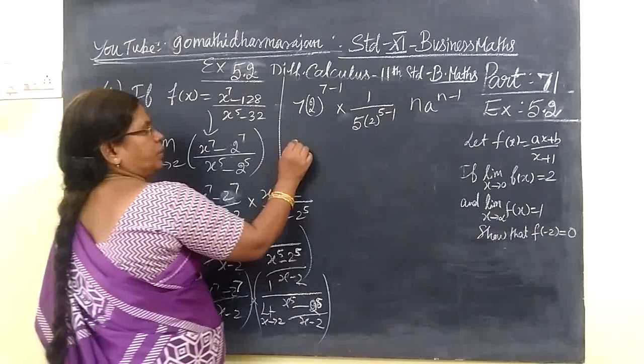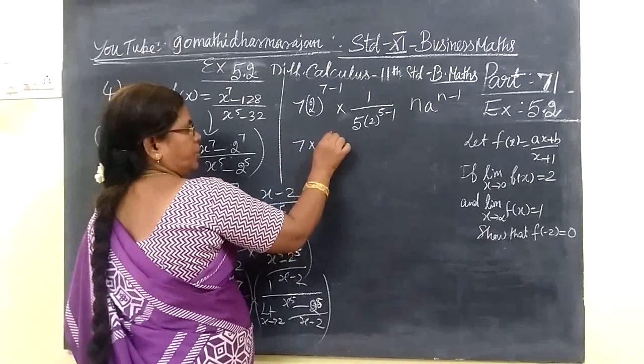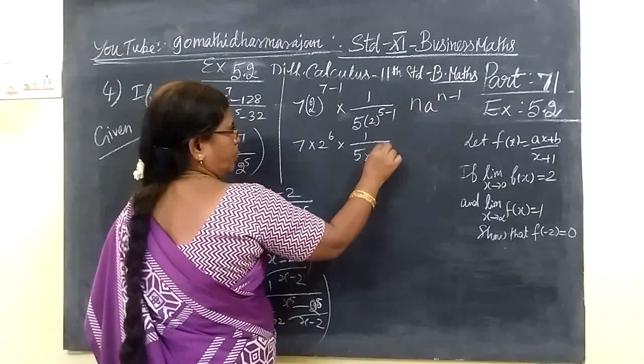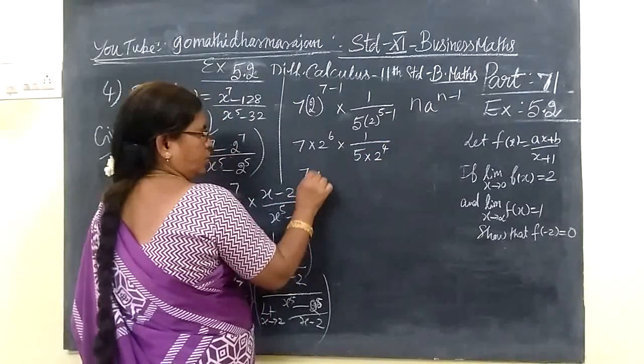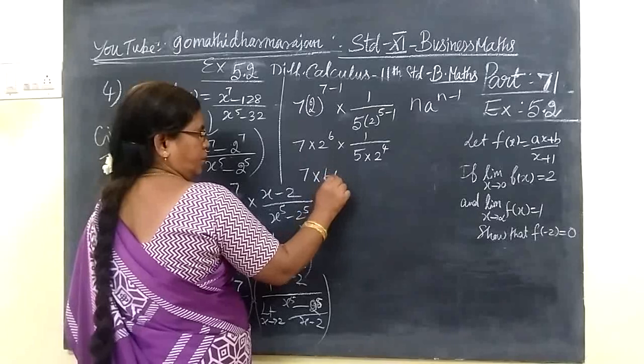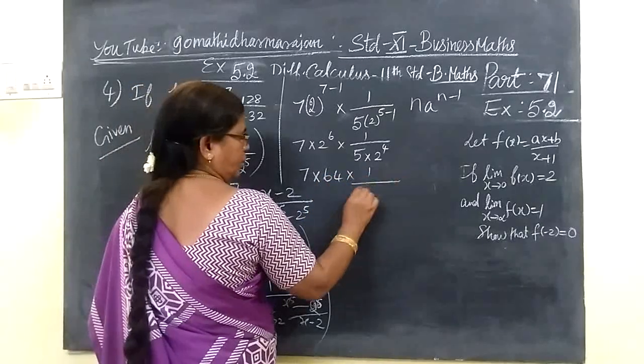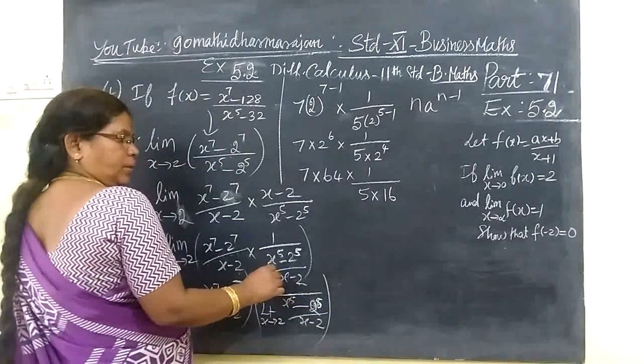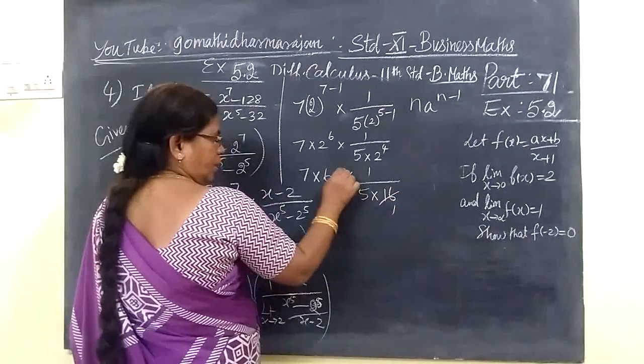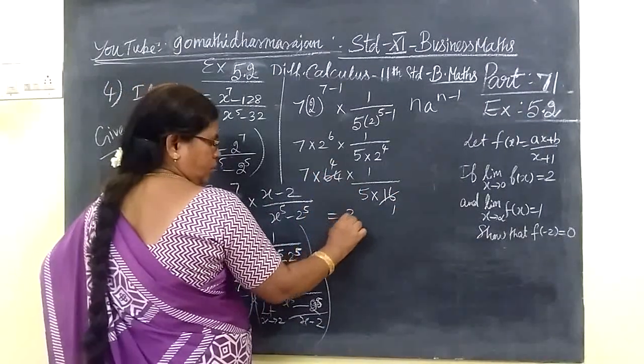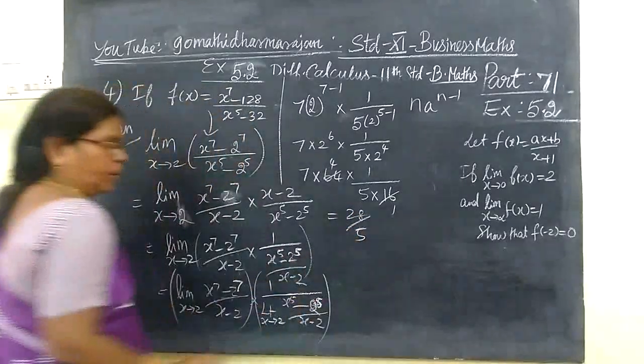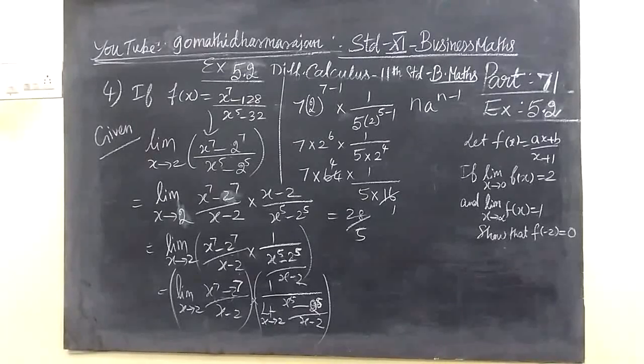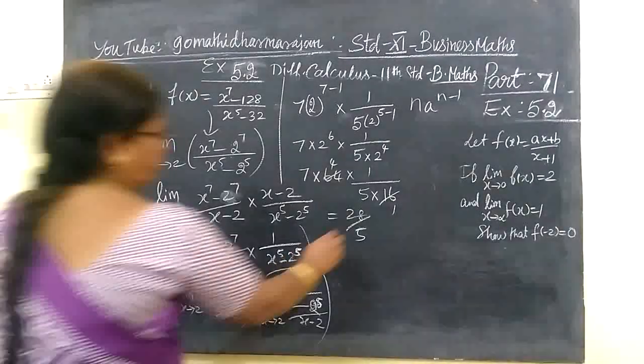Equal to 7 into 2 power 6 into 1 by 5 into 2 power 4. So 2 power 6 is 64 by 5 into 2 power 4 is 16. This is the answer for 4. So answer is 28 by 5. The answer is 28 by 5.